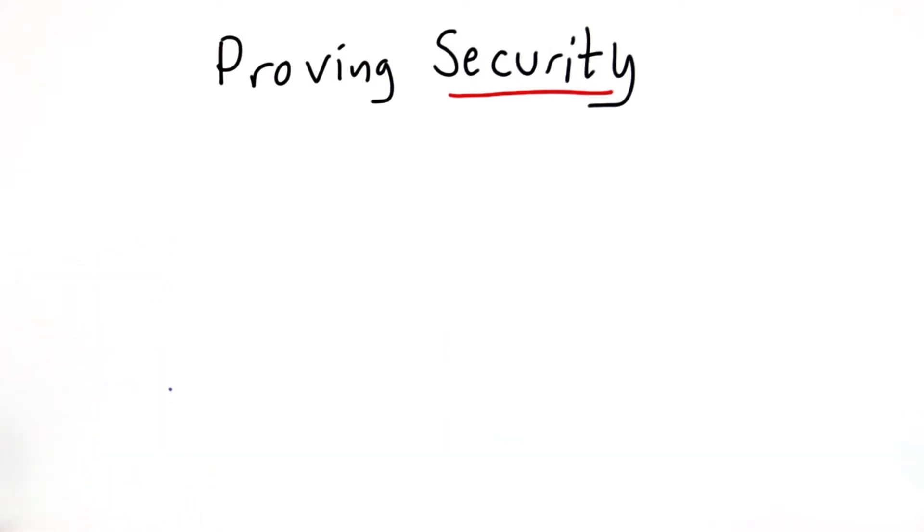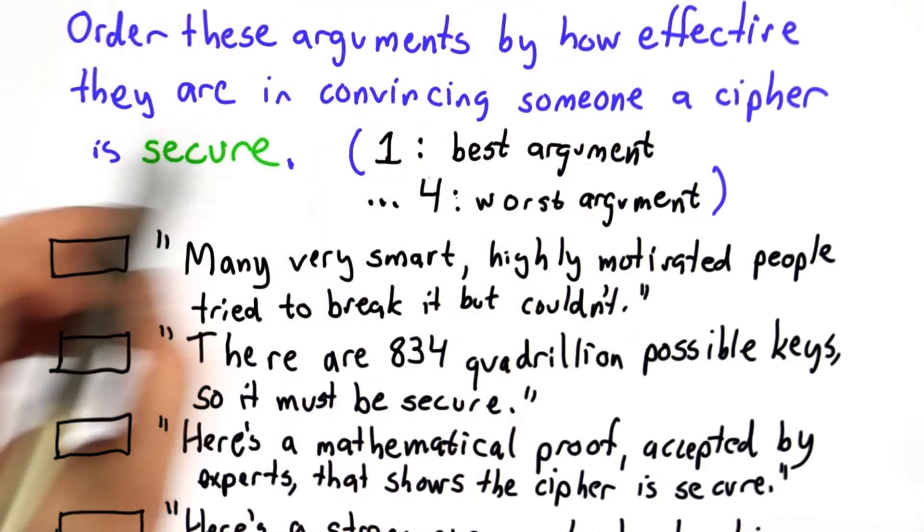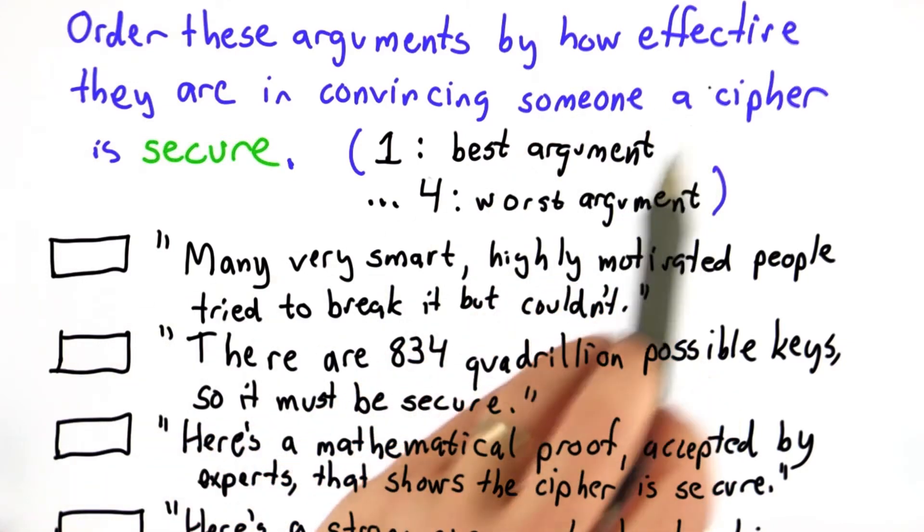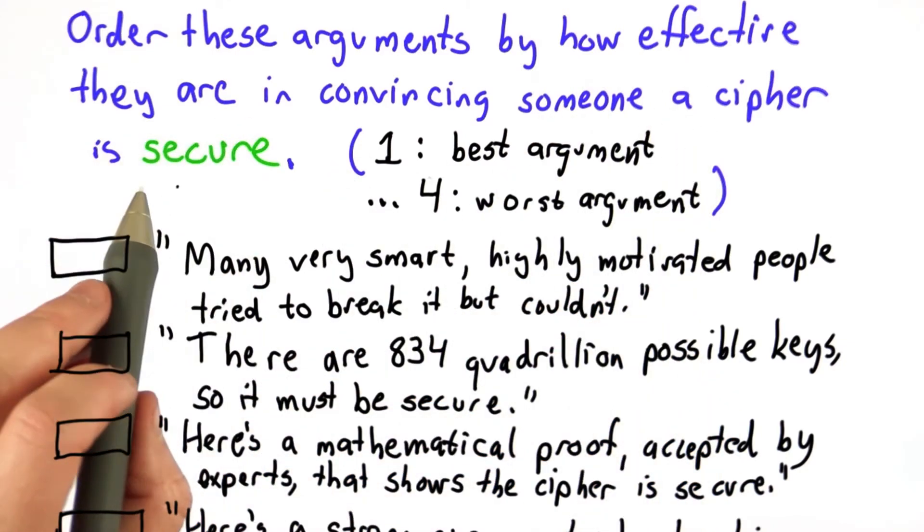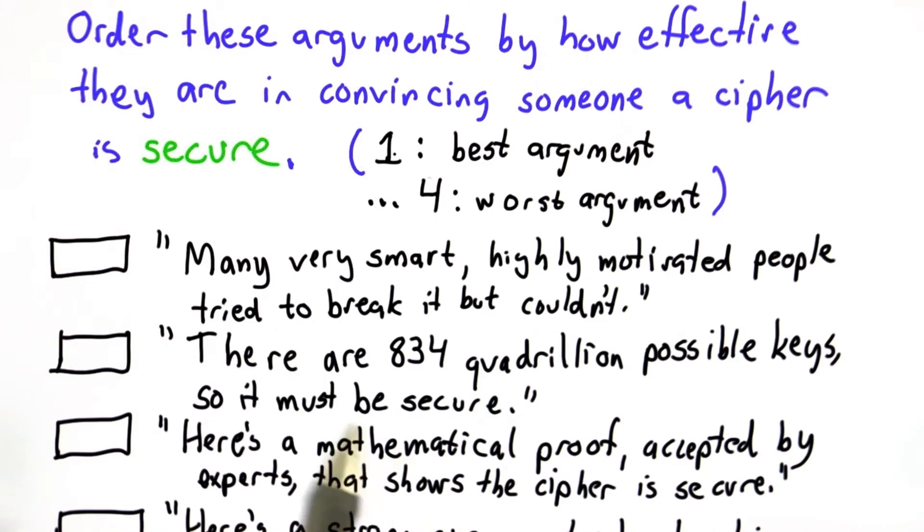I'm going to give you 5 possible ways someone might argue that a cipher is secure. So for this quiz, your goal is to order the arguments below by how effective they are in convincing someone that a cipher is secure. Use 1 to indicate the best argument, and 4 to indicate the worst argument.